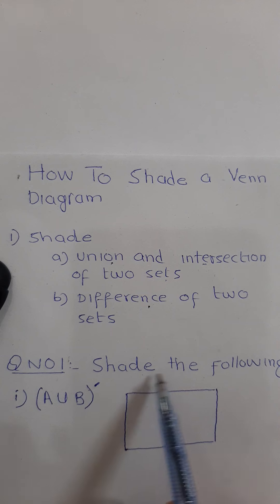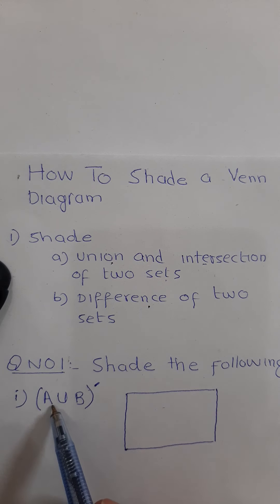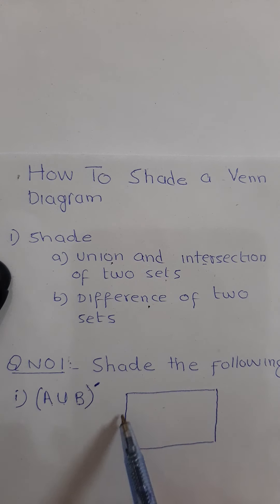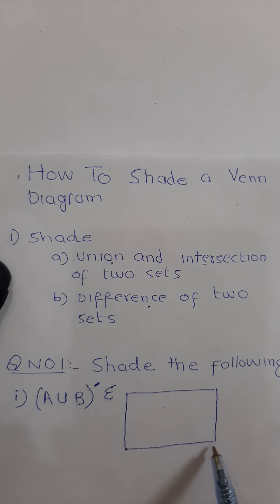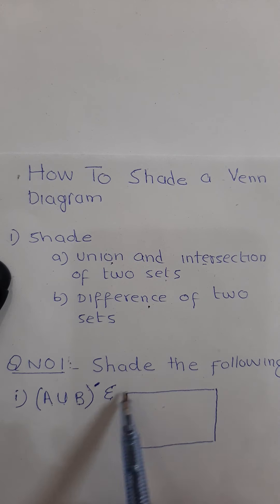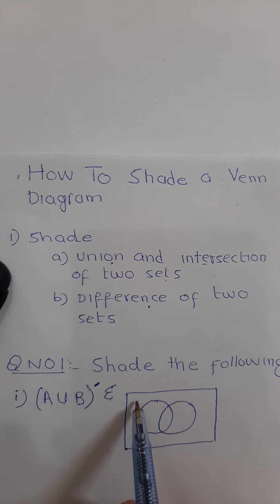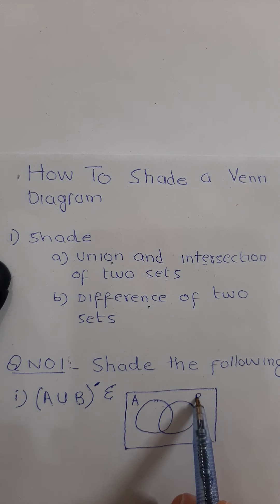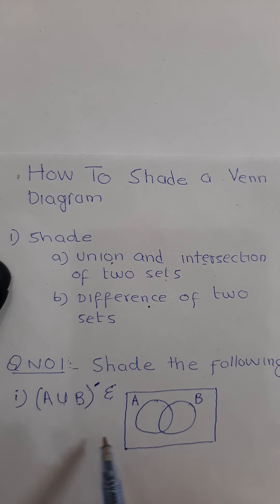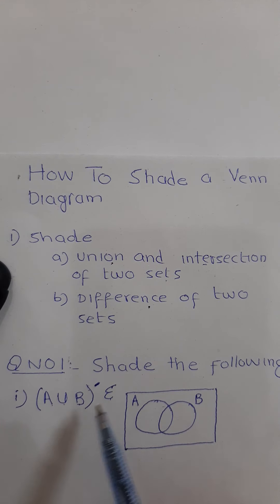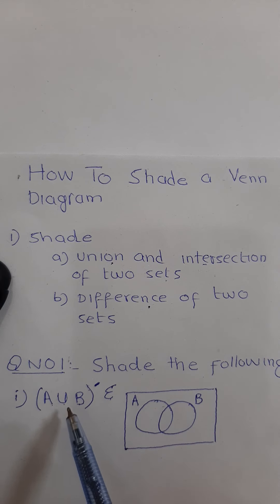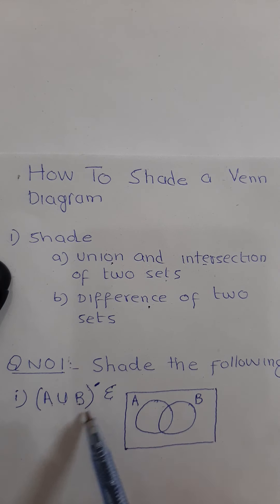Question number 1: shade A union B whole complement. This is a rectangle denoted by the symbol of the universal set, which is represented by this rectangle in a Venn diagram. Draw one circle named A and another named B. These circles represent subsets within the universal set. You have to shade the region indicated by A union B whole complement.